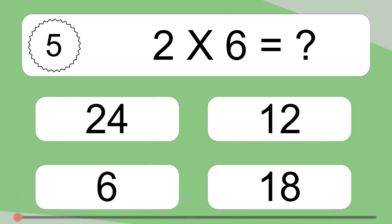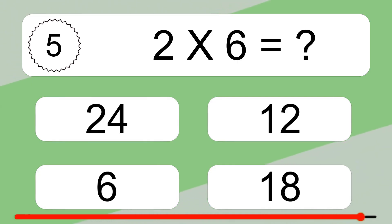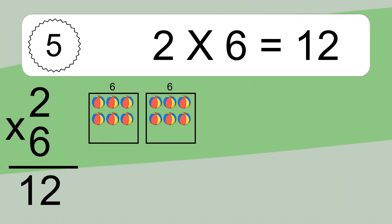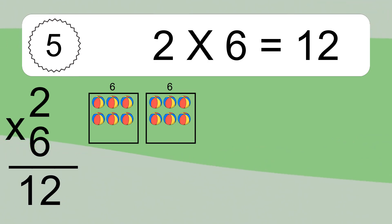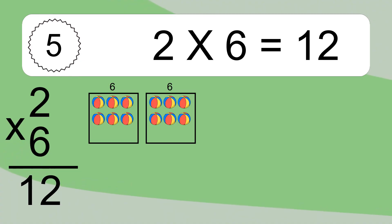10 times 6 equals what? 10 times 6 equals 12. We have 2 boxes, and each box has 6 colorful balls inside. If you count all the balls in all the boxes together, you will have 2 times 6 balls. This equals 12 balls.